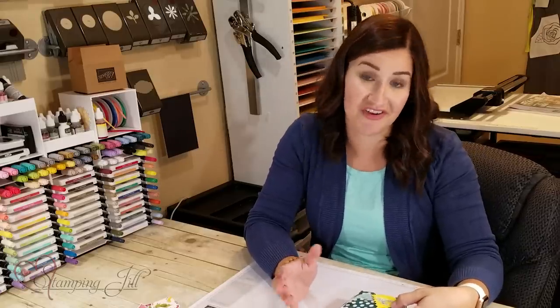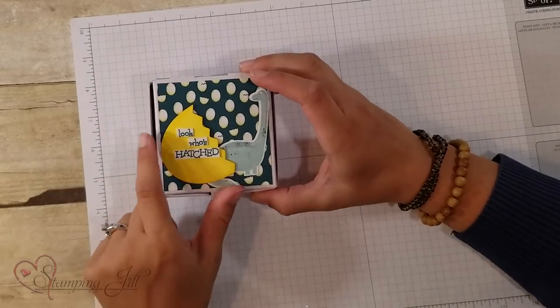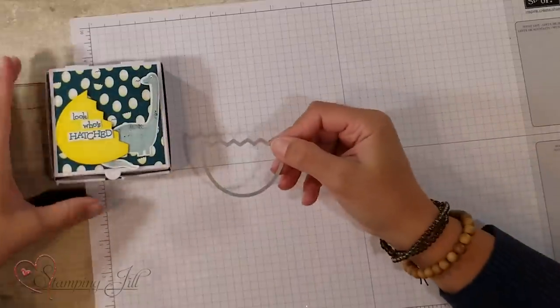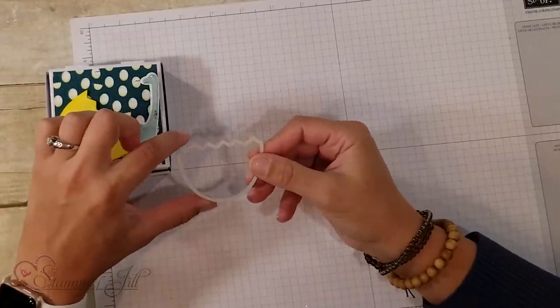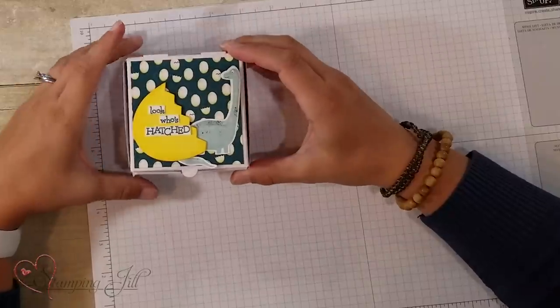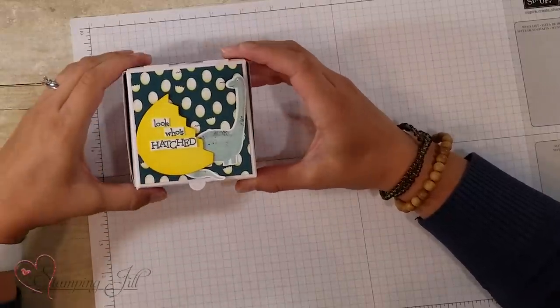One thing I love about this suite is that it's really versatile. There's one of the sayings in the stamp set that says, look who's hatched. One of the dies cuts out this cute little egg shape. So if you've got a new baby you want to celebrate or something, a new beginning, this look who's hatched was really cute.